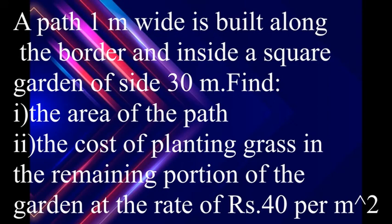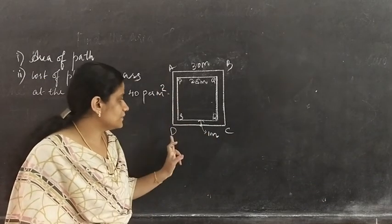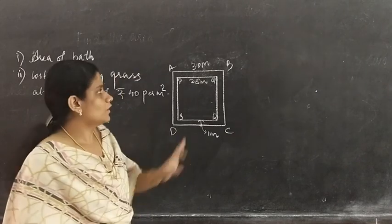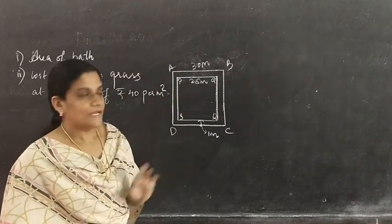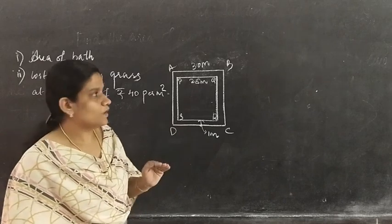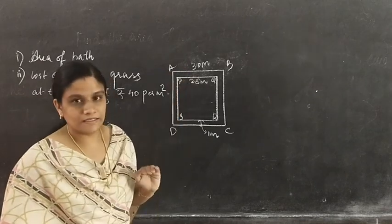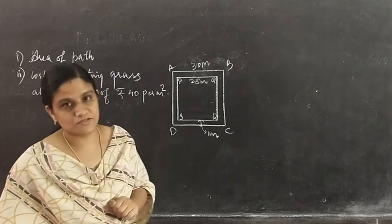Going to the next question. A path 1 metre wide is built along the border and inside a square garden of side 30 metres. Find the area of the path and the cost of planting grass in the remaining portion at the rate of rupees 40 per metre square. Let ABCD be the garden of side 30 metres. Inside this garden, a 1 metre wide path is constructed.